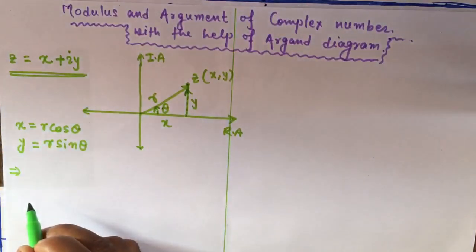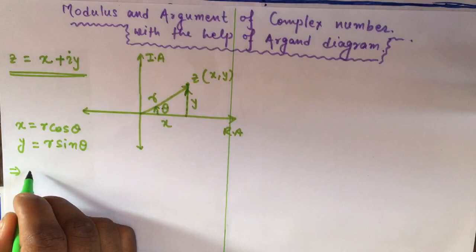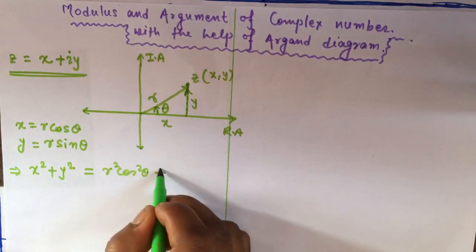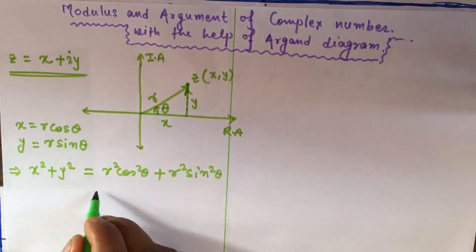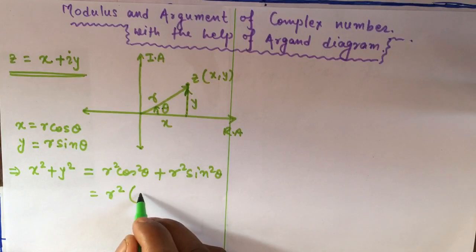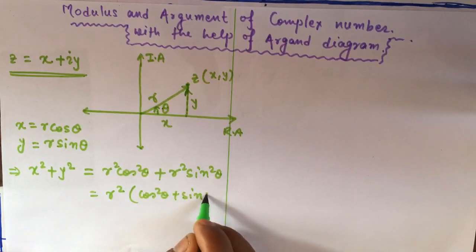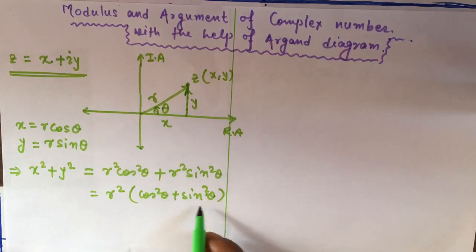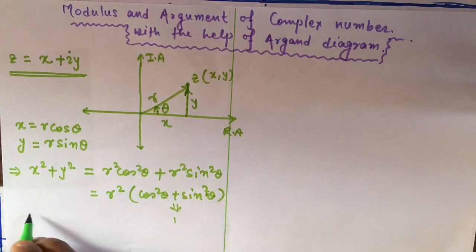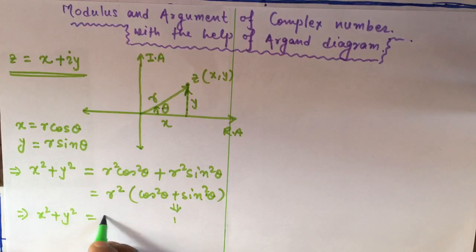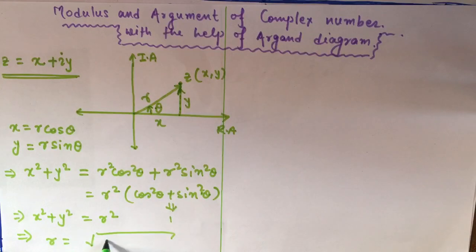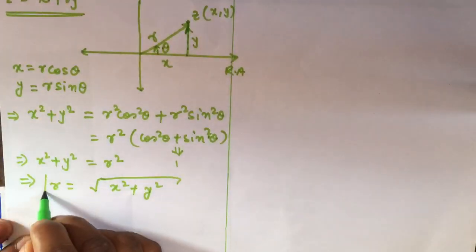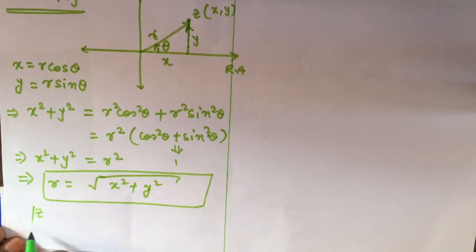Now let us square both and sum them: x² + y² = r²cos²θ + r²sin²θ. Taking out r² as a common factor gives r²(cos²θ + sin²θ). Using the trigonometric identity cos²θ + sin²θ = 1, we get x² + y² = r². Therefore, r = √(x² + y²), which is called the modulus of the complex number.